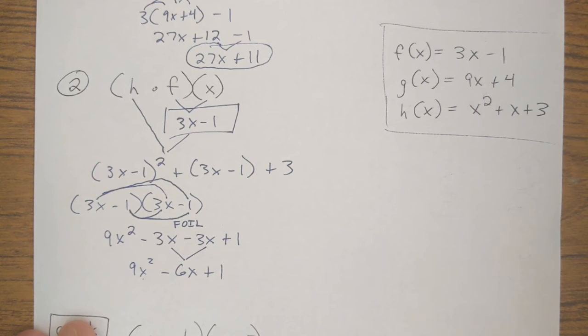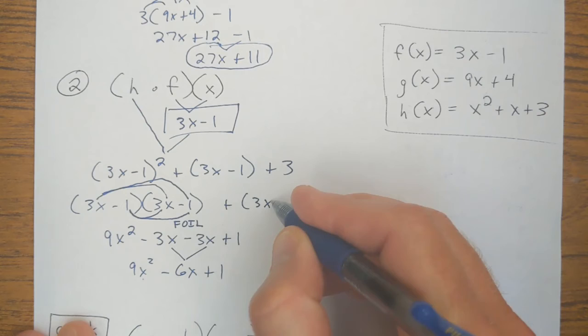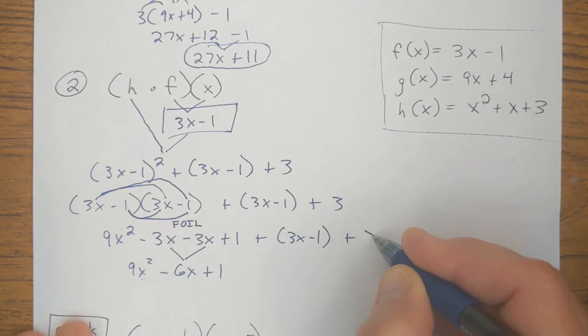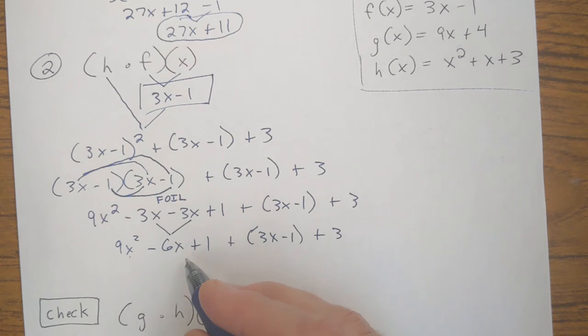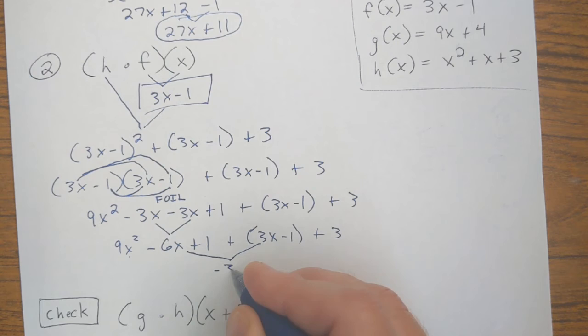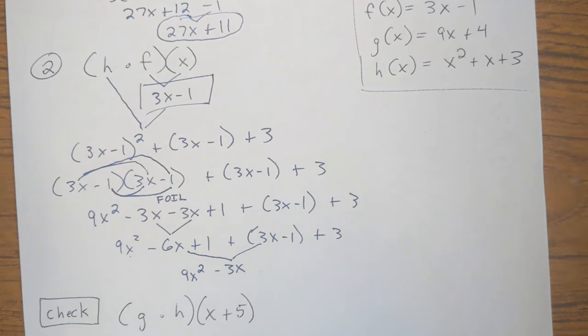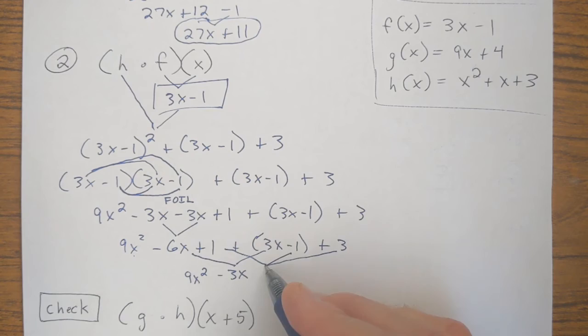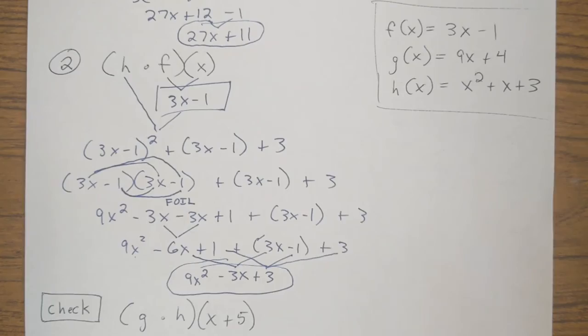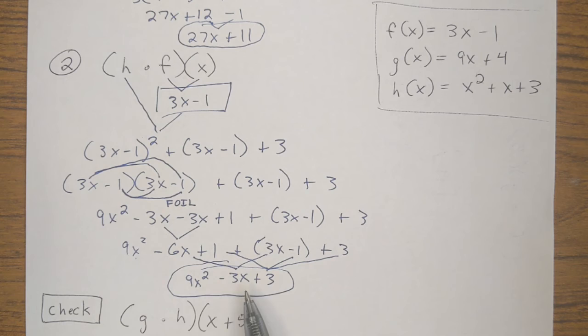Now I can carry down the rest of this problem. I'll write it out. Don't forget, we still have this plus 3X minus 1 plus this 3. When I combine all this together in my final step, let's see what I can do here. I can add a negative 6X plus a 3X. It's going to be a negative 3X. My 9X squared at the beginning, it has nothing to combine with. It's just going to stay a 9X squared. But my negative 6X plus 3X is negative 3X. I'm going to write minus 3X. And then I have a 1 minus a 1 plus a 3. That comes out to positive 3. So final answer, H of F of X is 9X squared minus 3X plus 3.